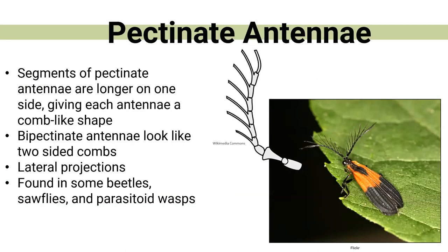This is a pectinate antenna, mostly found on things like parasitoid wasps and sawflies. What you see here is that it looks almost like a comb, but those little projections are only found on one side of the antenna — a little bit different from the ones we just saw on the scarab beetle. You've got the little pieces and joints right next to the head, and then it fans out.